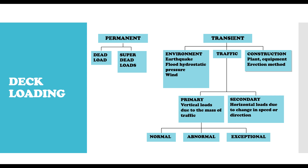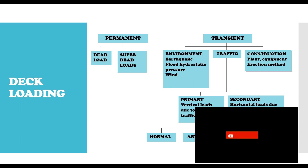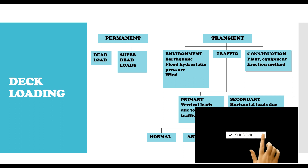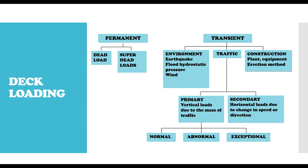Superimposed dead load is the weight of all material on the bridge deck that are not structural elements. An example is the road surfacing — the most common road surfacing is asphalt, so the weight of the asphalt laid on the bridge deck. In the case of a railway bridge, you can also have the weight of the ballast, and then the parapet in some situations. Those are the two permanent loads we have on bridge deck.